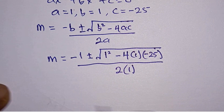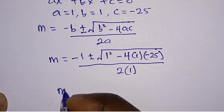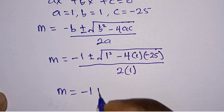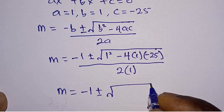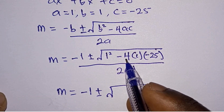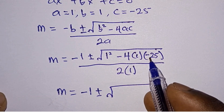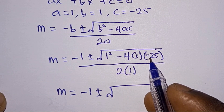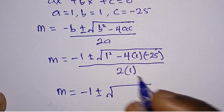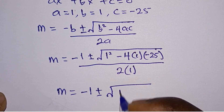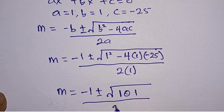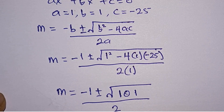If we simplify this, we have m equals negative 1 plus or minus square root of — negative 4 times negative 25 gives positive 100, plus 1 makes 101 — all divided by 2.